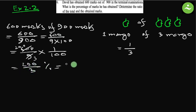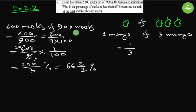So equals to 200 by 3 percent. If we convert it to a mixed fraction, this will be 66 and 2 by 3 percent.